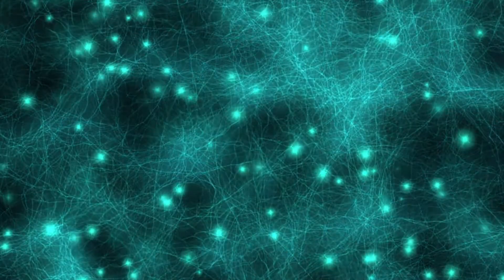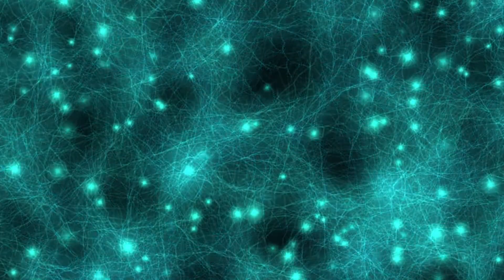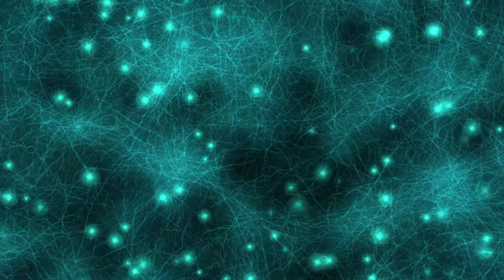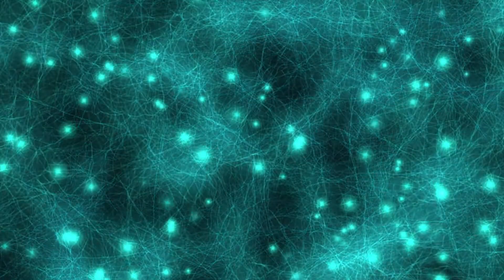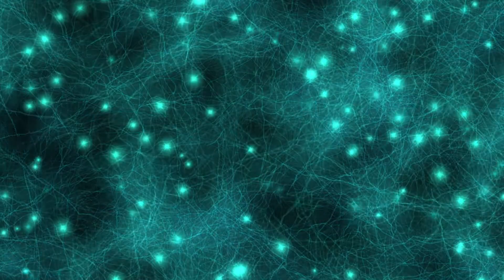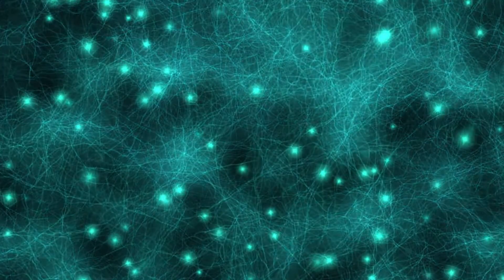Alpha brainwaves are associated with being in a relaxed, non-aroused state of mind. This is why closing your eyes throughout the day instantly helps you feel more relaxed, because it slows down your brainwaves.